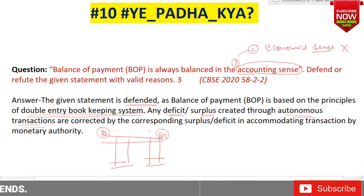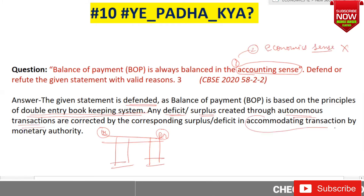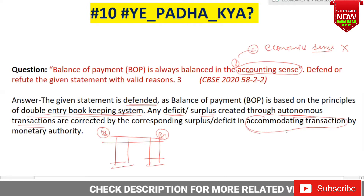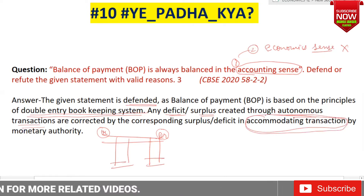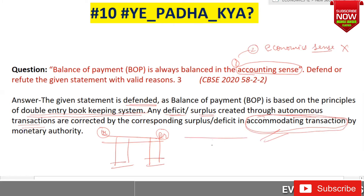Please listen carefully: if any deficit or surplus is occurring due to autonomous transactions, then it is corrected through accommodating transactions. As the name suggests — accommodate means to help. So accommodating transactions are there to correct the surplus or deficit which is appearing in the BOP account. The surplus or deficit is thus balanced out.